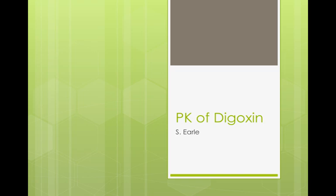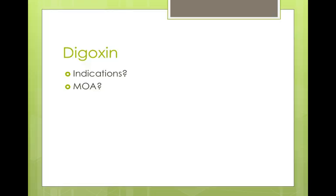So we're going to talk about digoxin first. What are the indications for digoxin? Well, digoxin is used usually for two different things. It can be used as a positive inotrope for CHF — increasing the force with which the heart pumps to try to improve cardiac output for people that have congestive heart failure. Or, as a negative chronotrope, to slow the conduction of the heart.